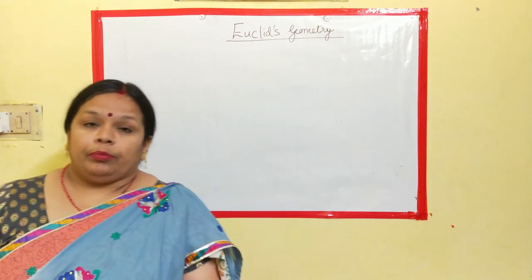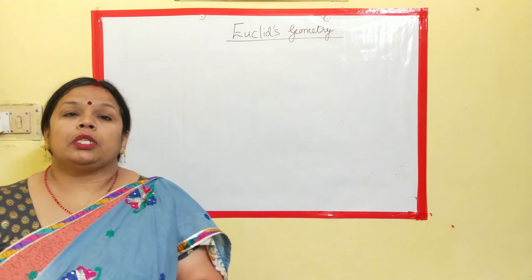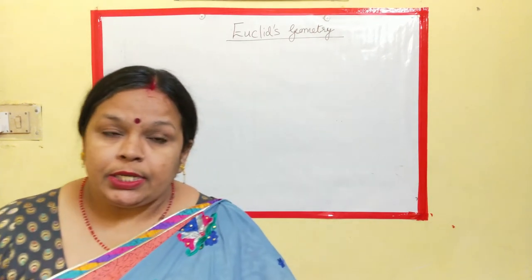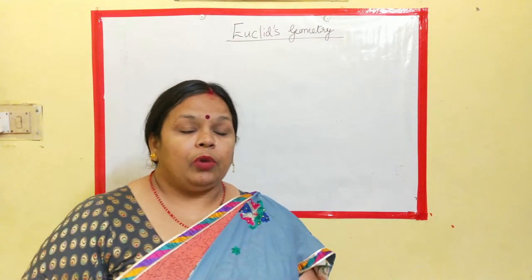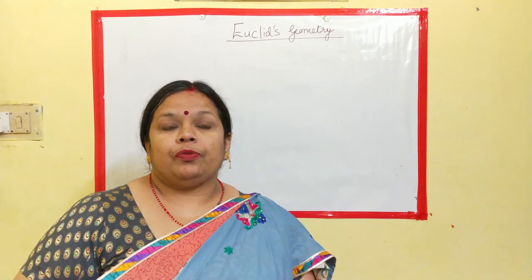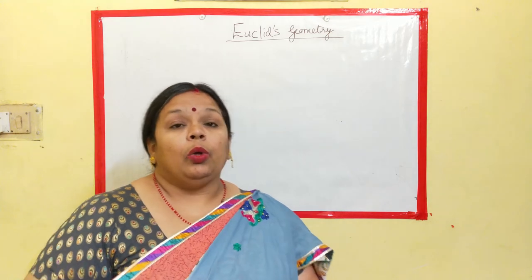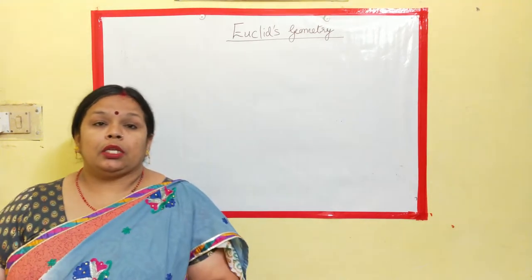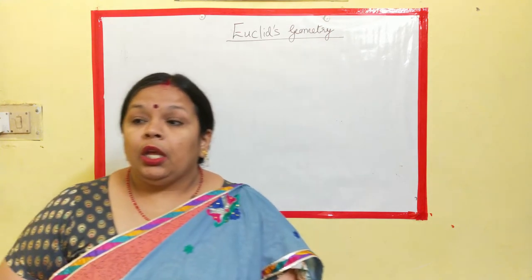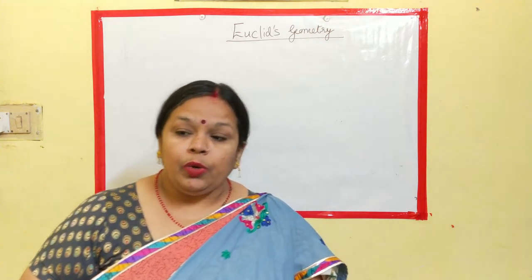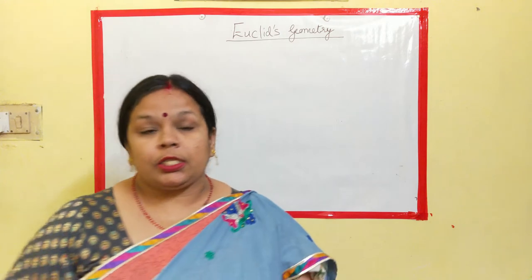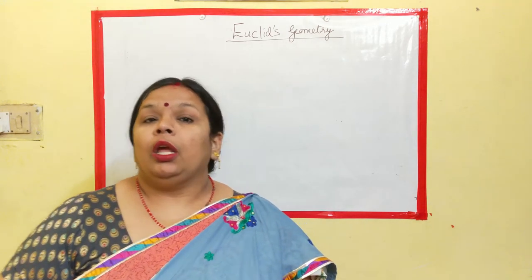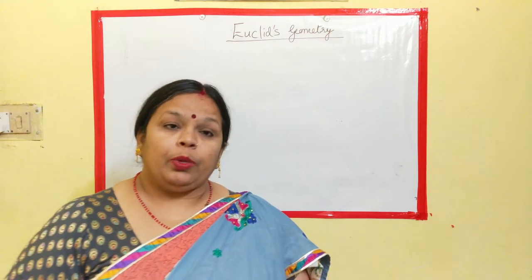Now let's keep our discussion further. What was the conclusion from the previous session? After seeing all the observations of Euclid's, it was being observed that using his axioms and postulates, he has round about proved 465 theorems which were totally based on his axioms and postulates.